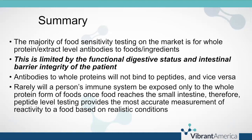The majority of food sensitivity testing on the market is for whole protein or extract level, which is limited by the functional digestive status and intestinal barrier integrity of the patient — two things that are in question in most patients seen in functional practices. Antibodies to whole proteins will not bind to peptides and vice versa, so 25 to 30 percent of individuals will not show antibodies to the whole protein form on a food sensitivity test but will have antibodies to the peptides within that protein on one of the food zoomers. Rarely is the whole protein form of foods actually presented to the immune system once it reaches the small intestine.